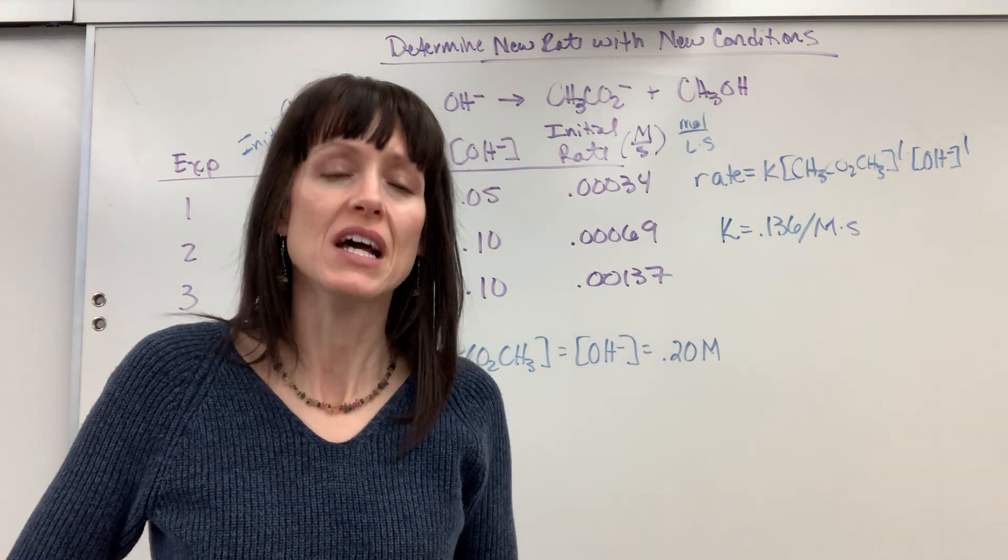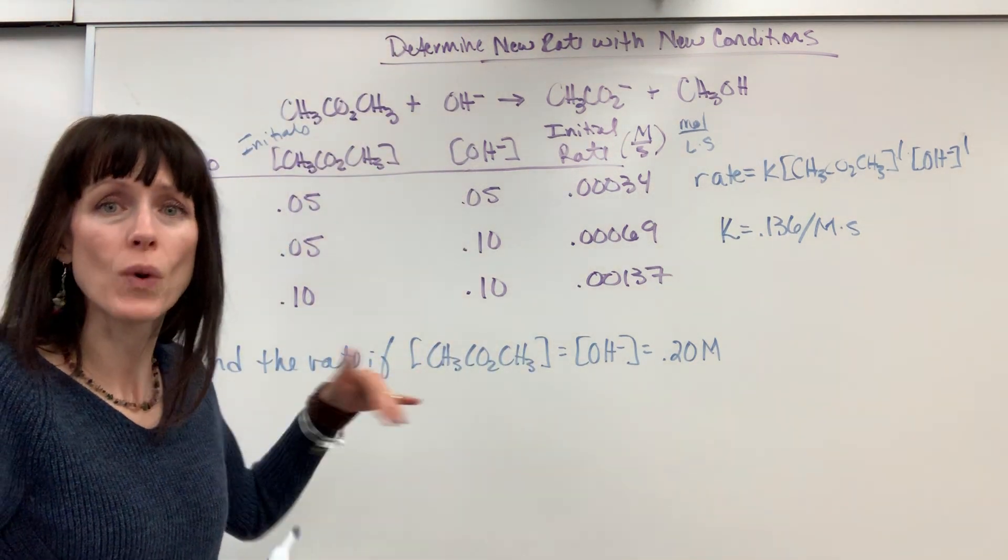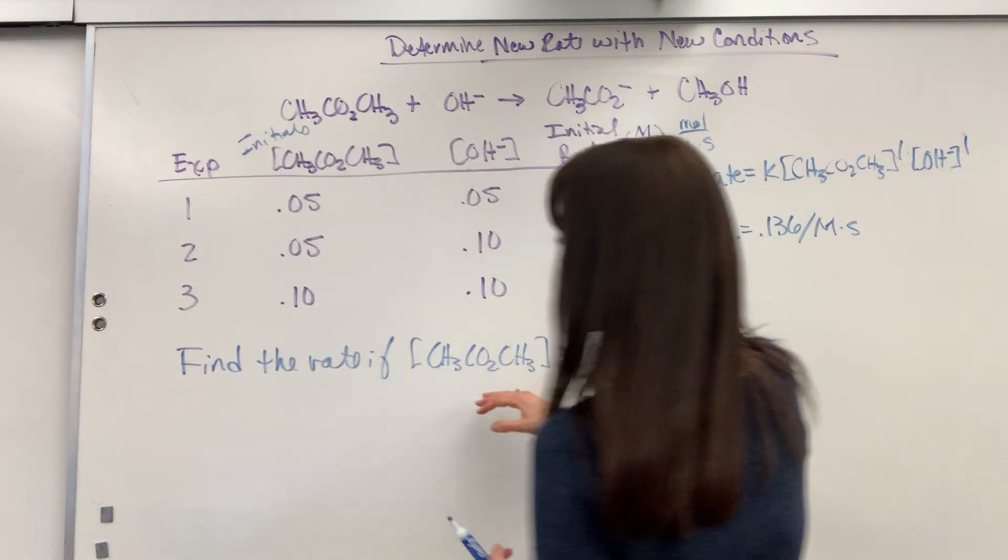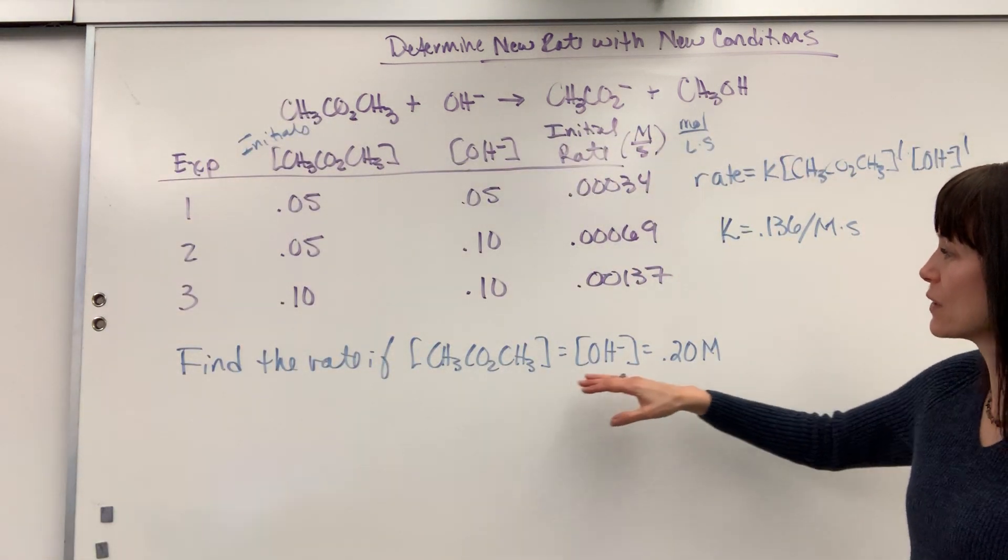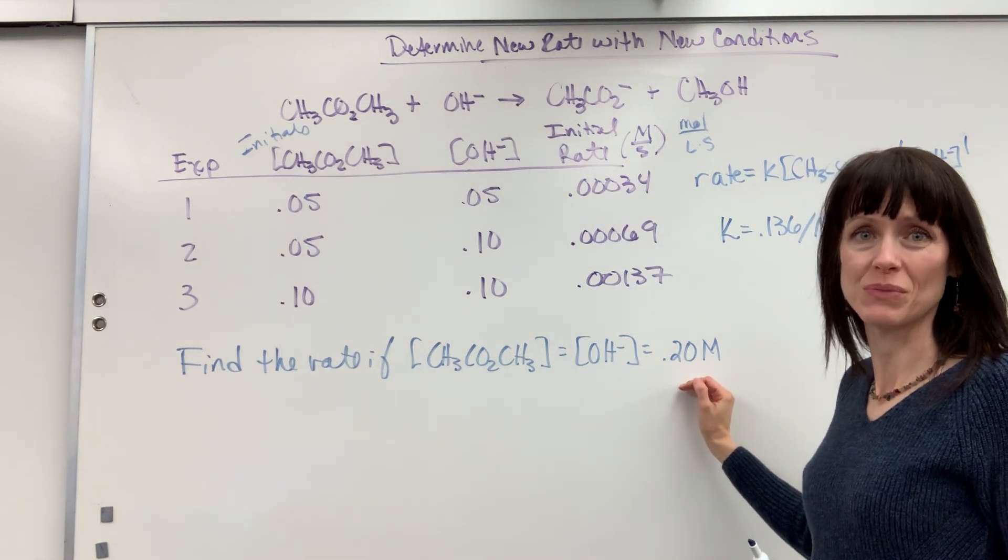Okay, here's the third question. They'll give you some new conditions and they'll say, given these new conditions, what's the new rate? You have to find a new rate. So in this example, it says, find the rate if methyl acetate equals the concentration of hydroxide, which is 0.02 molar.